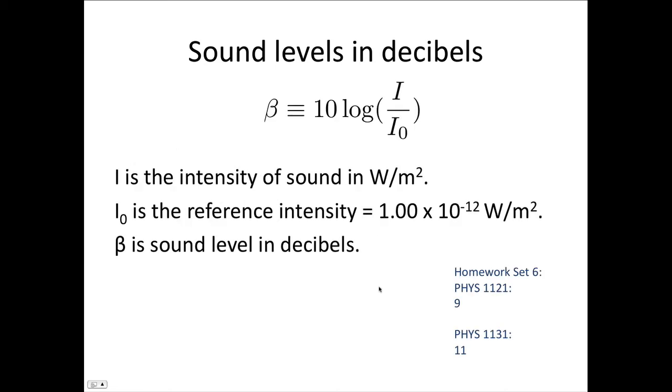In this equation, I is the intensity of sound in watts per meter squared. I_0 is the reference intensity, which is the lowest sound the human ear can pick up, which is 1 × 10^-12 watts per meter squared. And β is the sound level in decibels.